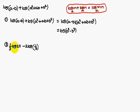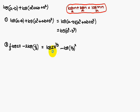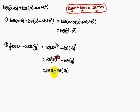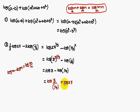Next problem: 1/3 log 27 minus 2 log(1/3). Using the power rule, rewrite as log 27 to the power 1/3 minus log (1/3) squared. Now 27 equals 3 cubed, so 27 to the power 1/3 equals 3. And (1/3) squared equals 1/9. So this becomes log 3 minus log(1/9). Using log M minus log N equals log M/N, this gives log(3 divided by 1/9), which is log 27.